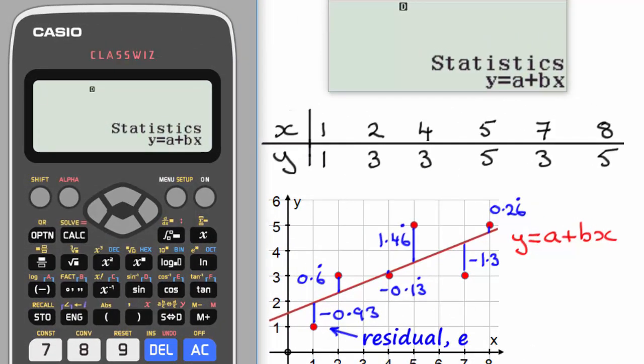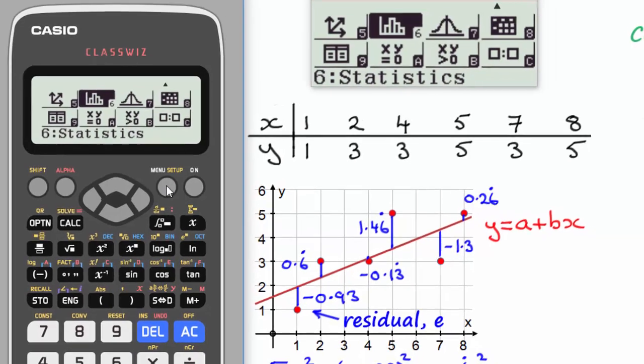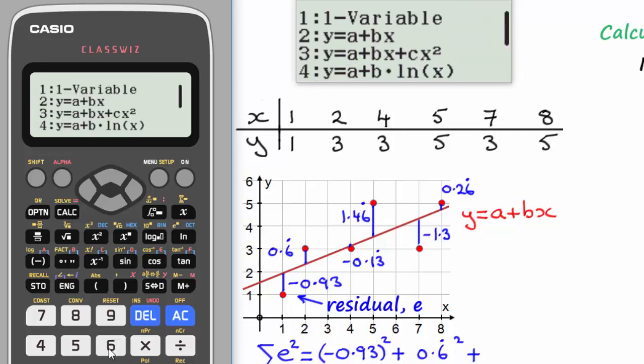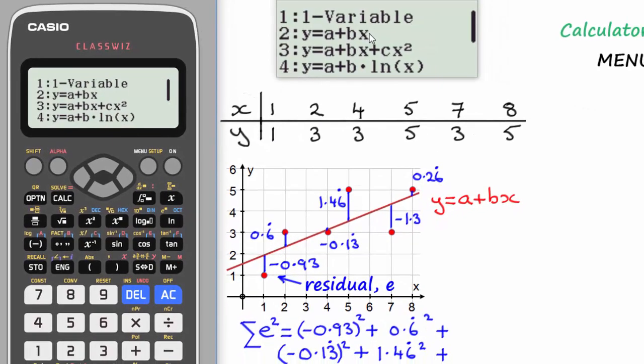Now the first thing that we need to do is select the menu key. So we tap that and choose option 6, which is the statistics menu. So if we choose option 6, we're then presented with this menu here. And we need to take option 2, y equals a plus bx. That's the form of the regression line for y on x.